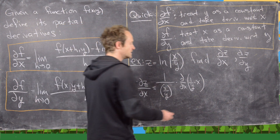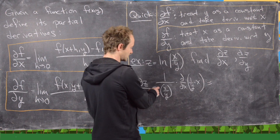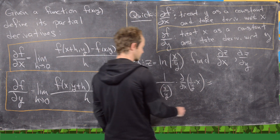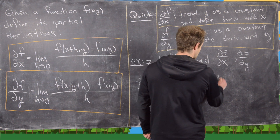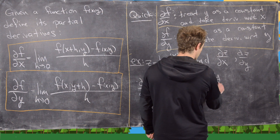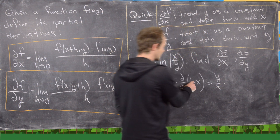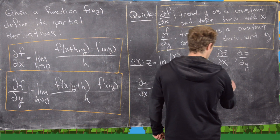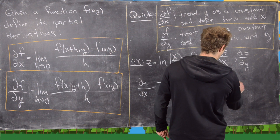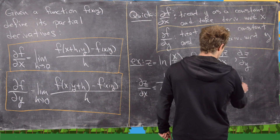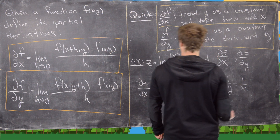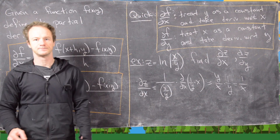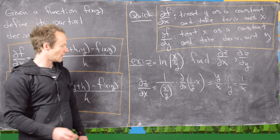So simplifying, we take the reciprocal of x/y to get y/x, then multiply by 1/y. So the answer is 1/x.